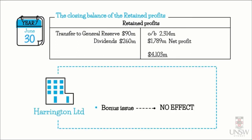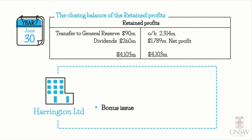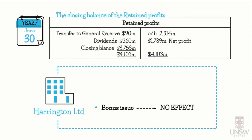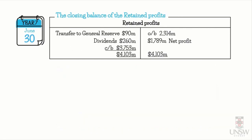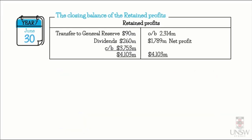We do not record the bonus issue of 50 million shares issued from revaluation reserve in the retained profits account, because it does not impact retained profits — it would appear in the share capital and revaluation reserve T-accounts. So the closing balance is $4,103 million minus $90 million minus $260 million, giving a closing balance of $3,753 million on the credit side.